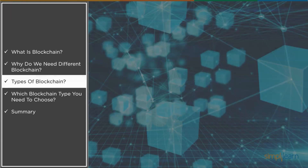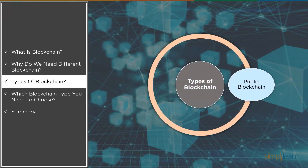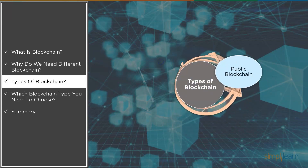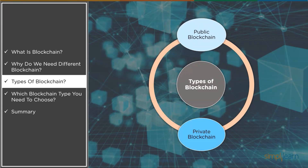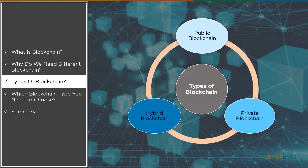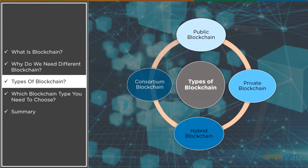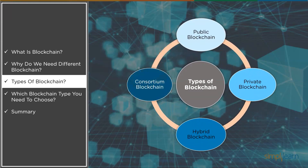There are majorly four types of blockchain. First is public blockchain, second is private blockchain, third is hybrid blockchain, and the last but not the least is consortium blockchain. Now let's understand each one of these in detail, starting with public blockchain.